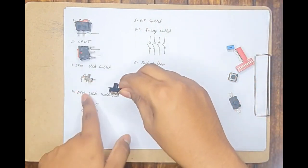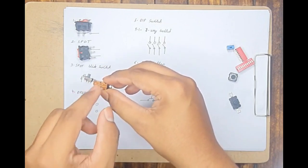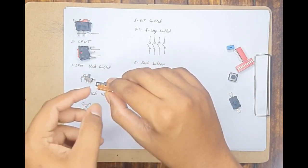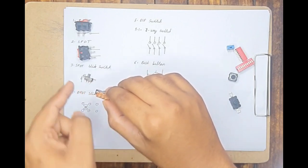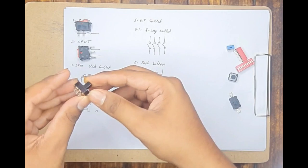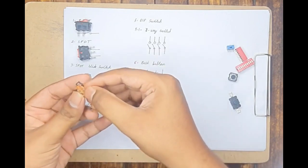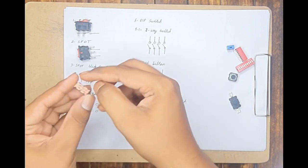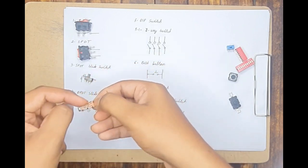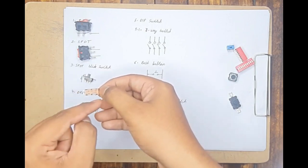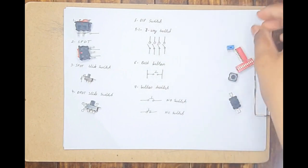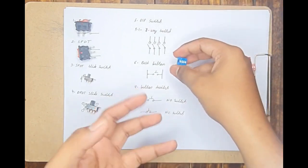Here is a DPDT slide switch. This is also a slide switch but it is not an SPDT — it is a DPDT slide switch because it consists of six terminals arranged three in each row, in two rows. Both these rows are isolated from each other — this row acts as an SPDT switch and so does the other row. As it has two such poles it is called a DPDT switch. Whenever the slider is in this position the switch is closed between these two terminals and these two terminals, and it is open between the other terminals. Similarly when I push the slider in the other position it closes the other set of terminals.